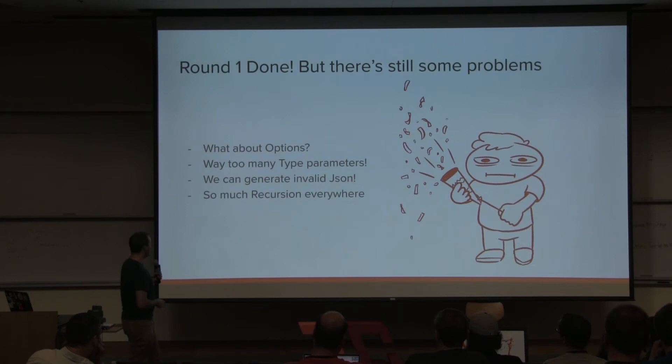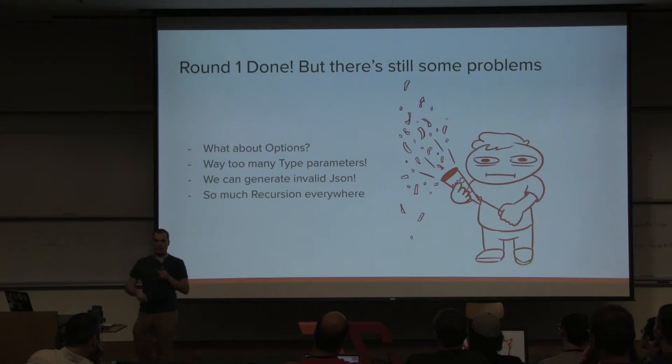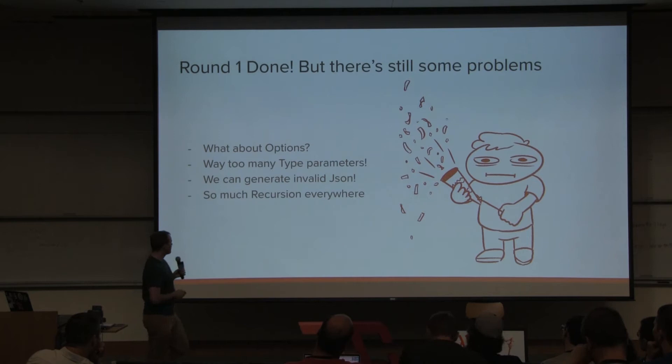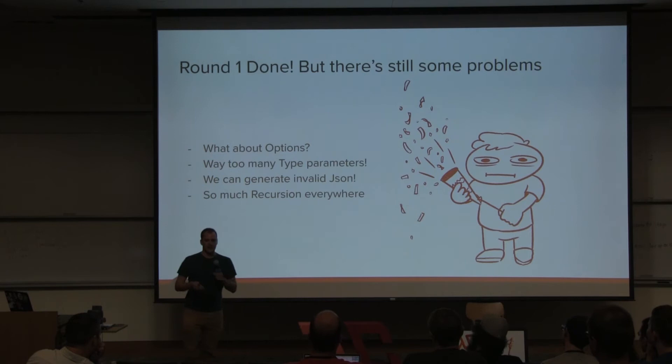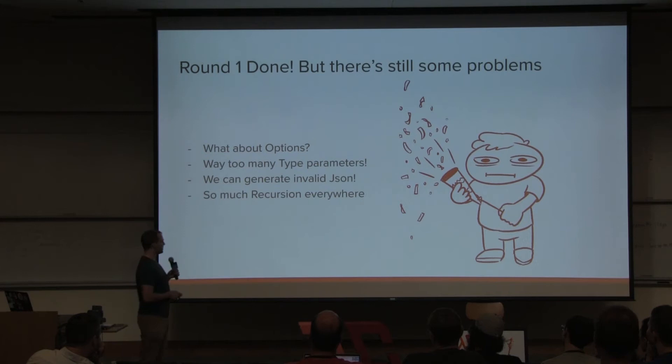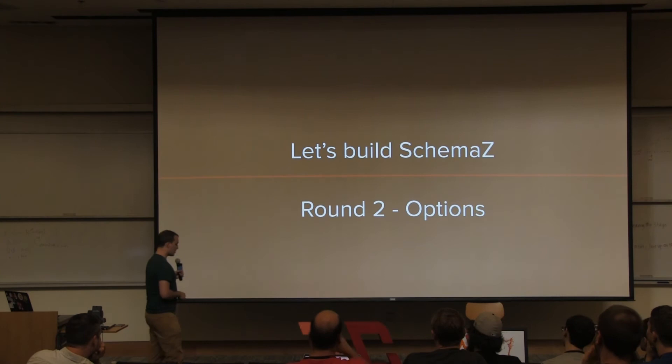That's our first naive implementation of schemaz. The issues: we have no Options or other constructions, we have way too many type parameters already, we can generate invalid JSON, and the toEncoder function is about 99% recursion — not nice to work with. Round two is going to be a short one, tackling Options.